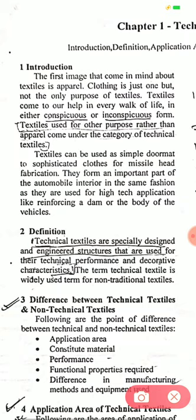Textiles can be used as a simple doormat to sophisticated clothes for missile head fabrication. They form an important part of the automobile interior, and are also used for high-tech applications like reinforcing a dam or the body of a vehicle. Definition: technical textiles are specially designed and engineered structures that are used for their technical performance, not for aesthetics or decorative characteristics. The term technical textiles is a widely used term for non-traditional textiles.